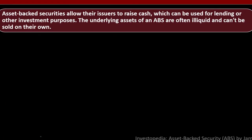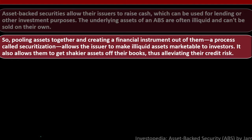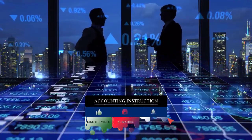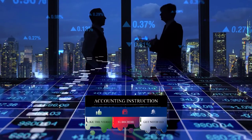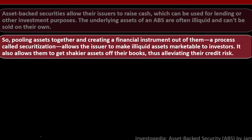Asset-backed securities allow their issuers to raise cash, which can be used for lending or other investment purposes. The underlying assets of an ABS are often illiquid and can't be sold on their own. Pooling assets together and creating a financial instrument out of them — a process called securitization — allows the issuer to make illiquid assets marketable to investors, enabling them to be bought and sold more readily.